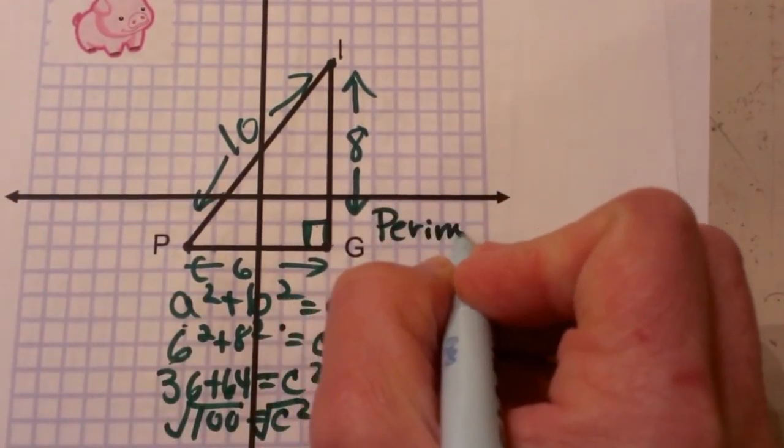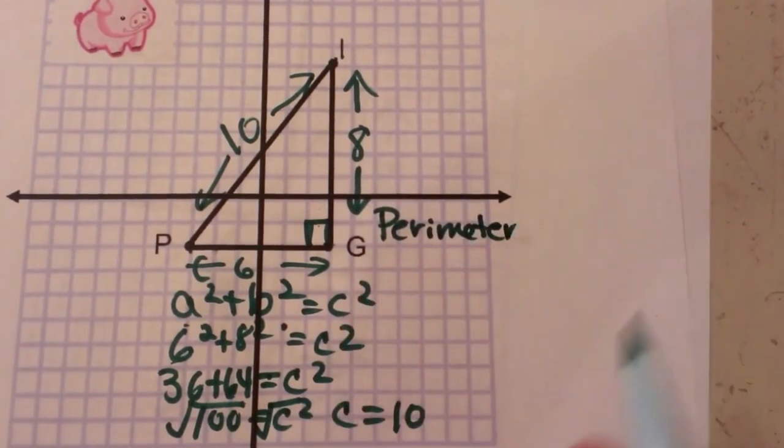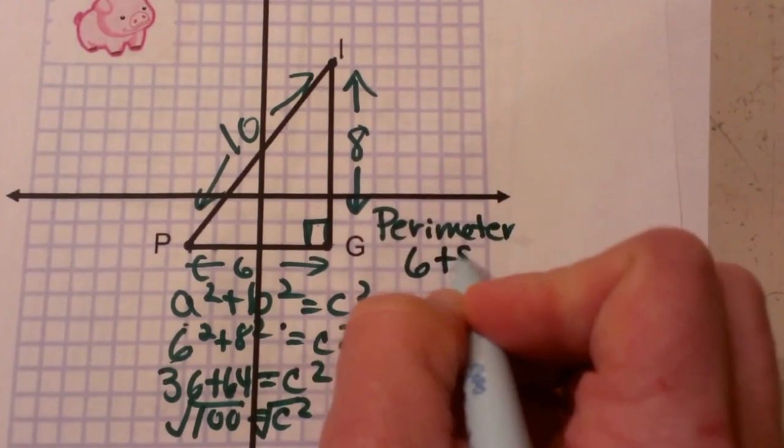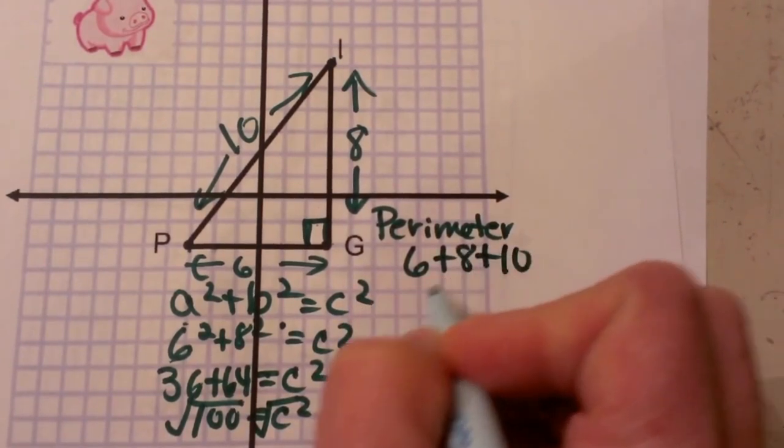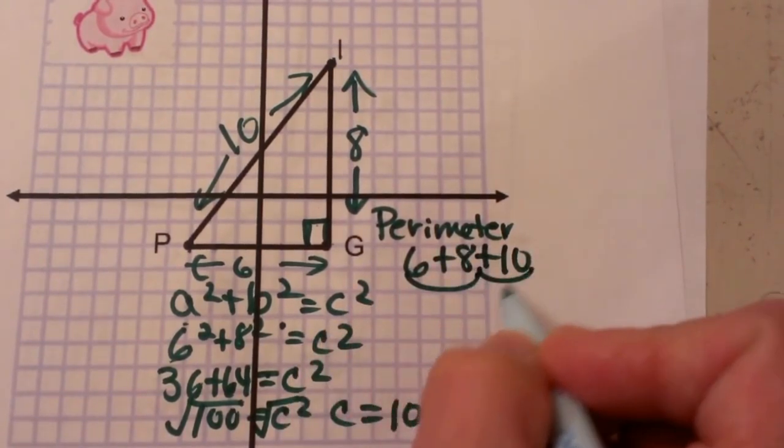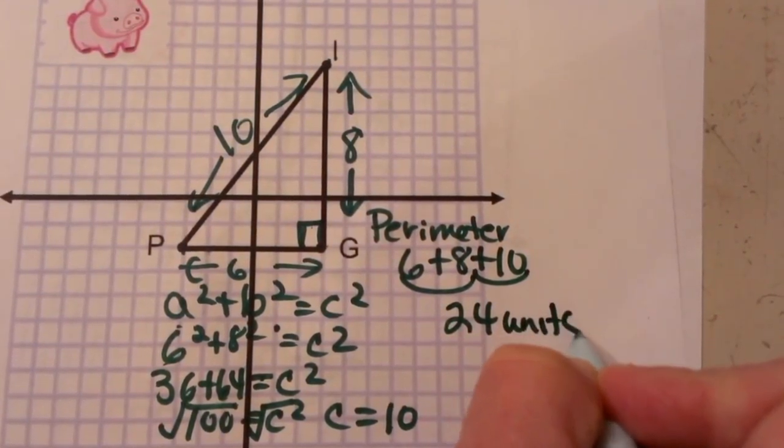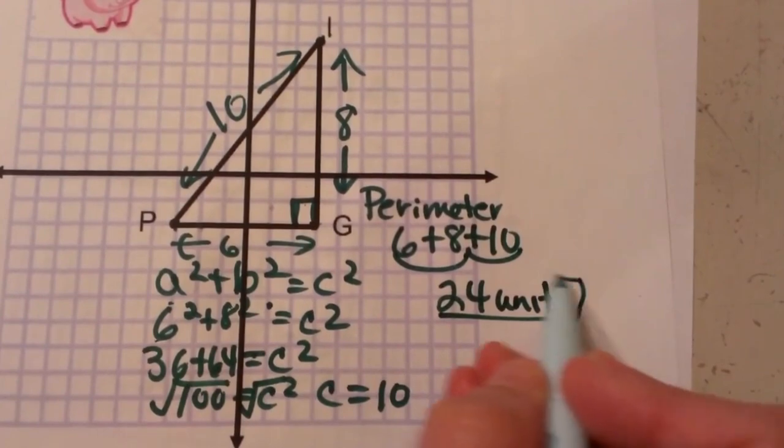how do you find the perimeter of any triangle? Well, you add the three sides. So I'm going to take 6 plus 8 plus 10. 6 and 8 is 14, plus 10 is 24. So that means the perimeter of the triangle is 24 units long.